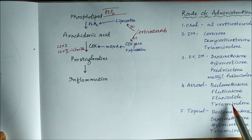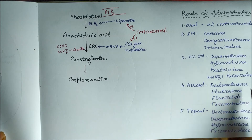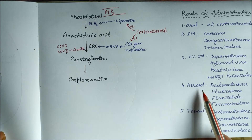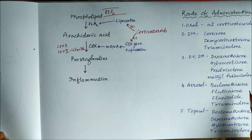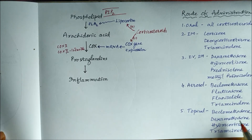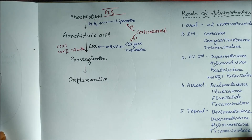Beclomethasone, fluticasone, flunisolide, and triamcinolone can be used as inhalation or aerosol for treatment of asthma, since asthma is an inflammatory condition. Topically, in the form of ointments, beclomethasone, dexamethasone, hydrocortisone, and triamcinolone can be used.